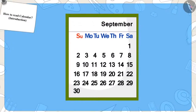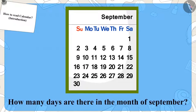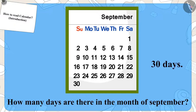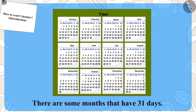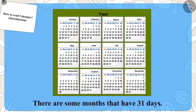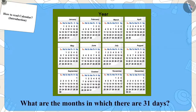Children, can you tell how many days are there in the month of September? That's right — 30 days! Children, do you know that there are not 30 days in all months? There are some months that have 31 days. Can you tell by looking at the calendar which months have 31 days?